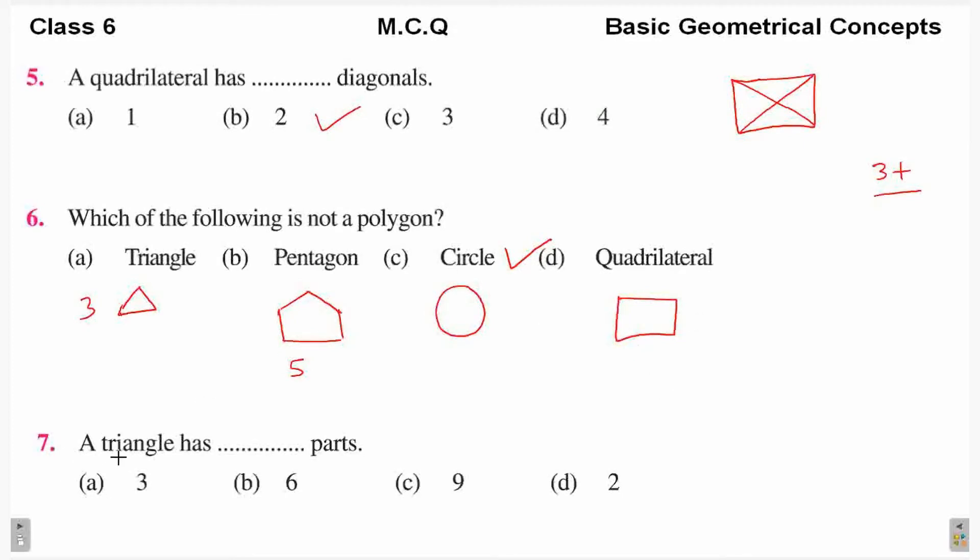Next, a triangle has how many parts? So three sides plus three angles, they make six parts of a triangle. Triangle has six parts. Three sides and three angles make six parts of a triangle.